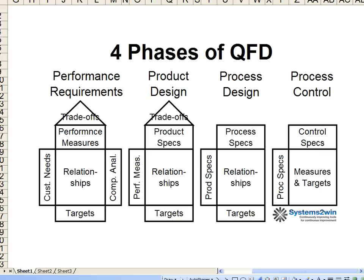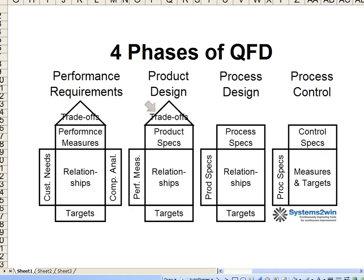In phase two, those same performance measures that were the columns in phase one become the rows in phase two. Now you look at the relationships between those performance measures and the more detailed product or service specifications. There might be trade-offs in the top of the house where one product spec might either supplement or detract from another, but there is no competitive analysis this time.